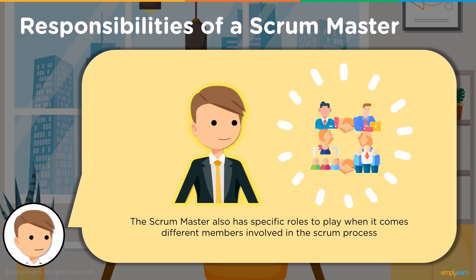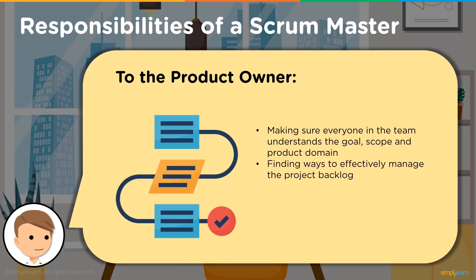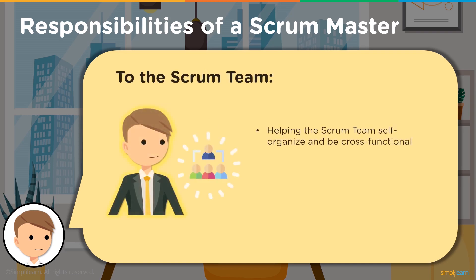Regarding responsibilities to the product owner: the Scrum Master makes sure the goals, scope, and product domain are understood by everyone on the team. The Scrum Master needs to find a way to effectively manage the product backlog, helping the Scrum team understand why it needs to be clear and concise. The Scrum Master also ensures the product backlog is arranged properly and facilitates Scrum events like sprint retrospectives, sprint planning sessions, and daily Scrum events.